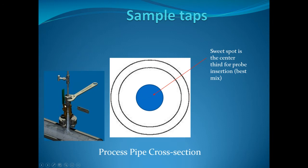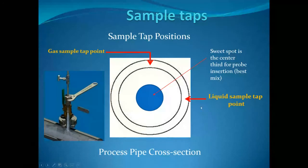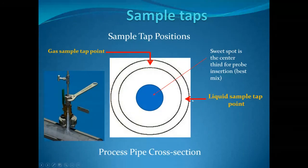One method uses a packing gland with a sample probe that can be raised and lowered, often with indicators showing how deep to penetrate into the sweet spot. The type of sample — gas or liquid — also affects probe placement. Generally, if sampling a gas, you take it off the top, leaving liquids at the bottom. If sampling a liquid, take it off the side of the pipe, leaving gases at the top and solids at the bottom.